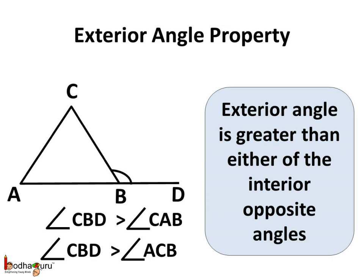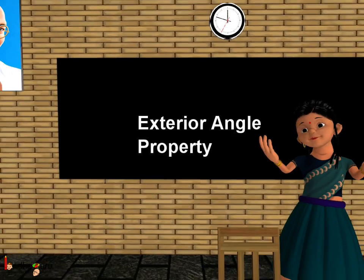This also means the exterior angle of a triangle is greater than either of the interior opposite angles. In triangle ABC, angle CBD is an exterior angle, and hence angle CBD is greater than the interior opposite angle CAB which is angle A. In the same way, the exterior angle CBD is also greater than the interior opposite angle ACB which is angle C. That's all for now. Bye-bye children.